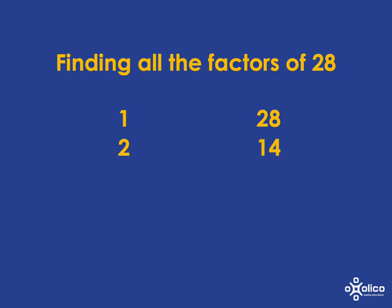2 goes into 28 with no remainder, and 2 times 14 gives you 28, so both 2 and 14 are factors. 3 doesn't go into 28 with no remainder, so we leave that out. 4 does go into 28 because 4 times 7 is 28, so 4 and 7 are both factors. 5 and 6 don't go into 28 with no remainder. 7 does, but we're repeating something we've already got, so we don't need to do it again — and we know we've found all the factors of 28.